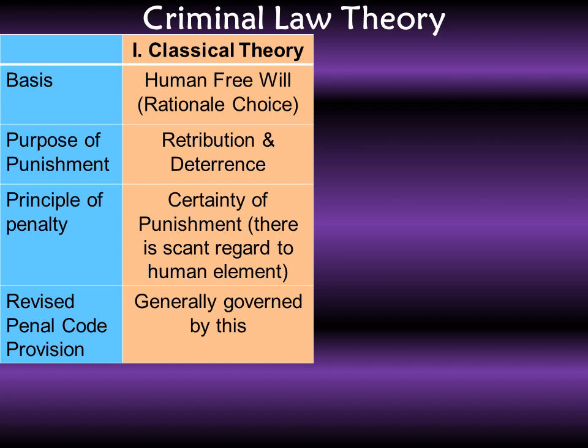Let's begin with the theory of criminal law. Compared to criminology theory, in the theory of criminal law it is almost the same — the first is the classical theory. When we talk about the classical theory of criminal law, it is focused on the fact that men have free will, that all human beings are rational creatures and therefore know right from wrong. Thus, the purpose of giving punishment is primarily as a form of retribution — the reaction of society towards people who commit crime. They commit the crime, they need to be punished, because that serves justice to the community as a form of social vengeance.